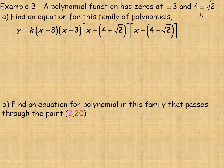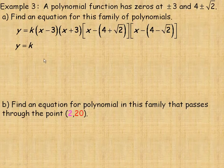Now we're going to expand this all out to get a general equation for this family of polynomials. First, I'm going to multiply x minus 3 by x plus 3. x times x is x squared, and negative 3 and positive 3 multiply to negative 9. The linear terms add to 0 because negative 3x and positive 3x cancel out.